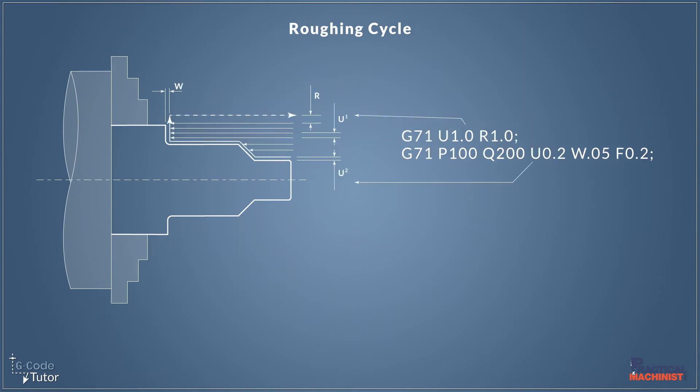Let's have a look at the information we need to give our roughing cycles. This is a two-line G71 roughing cycle. It's also available in a single line and this depends on our machine controls. We start off each line with G71 and this lets the machine know all the information that follows is about that cycle. Along this top line here we have U and I've given it a value of 1.0. This is our depth of cut. This is how much material is removed each pass.